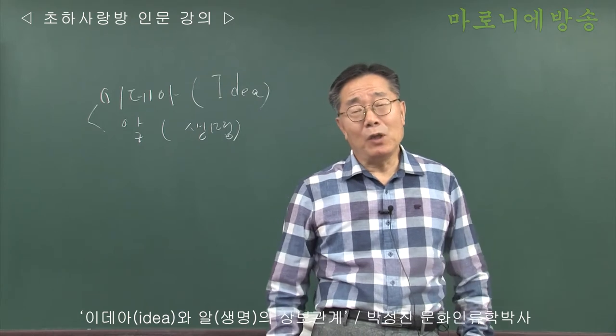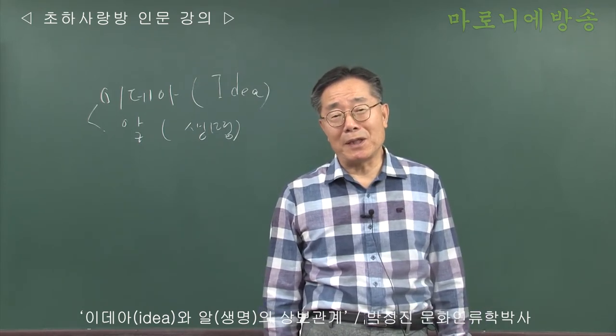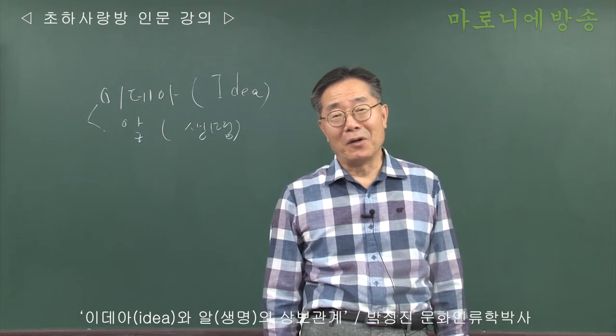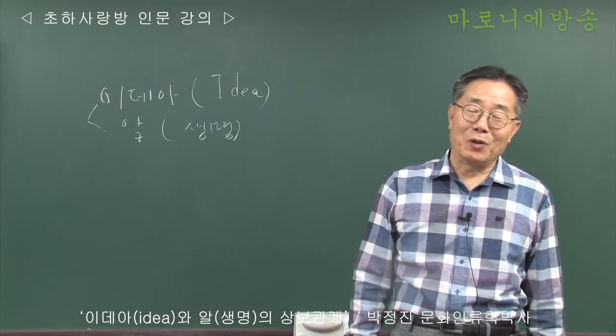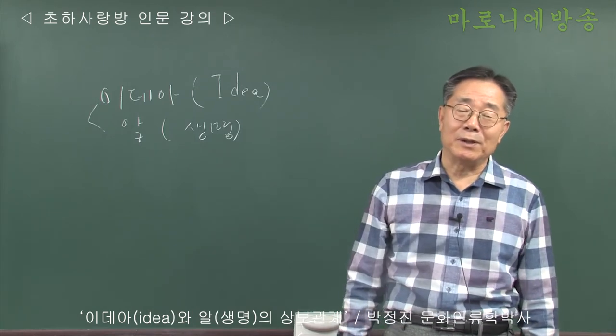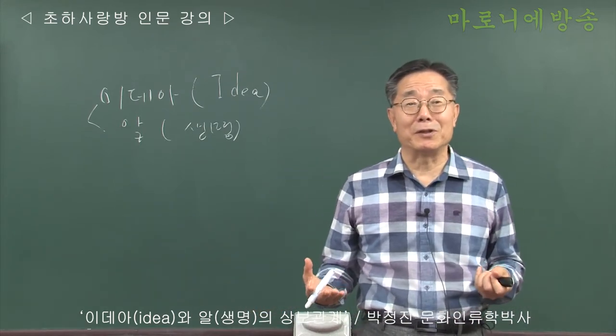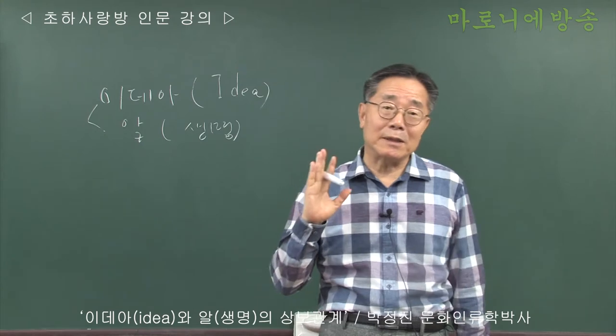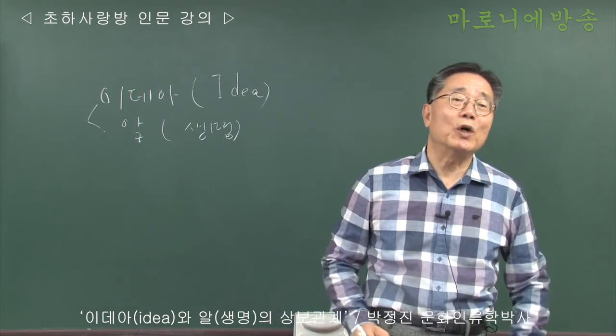여러분 인류의 4대 종교든 5대 종교든 어디서 발생하는지를 다 알고 계시죠? 종교는 다 동양에서 발생한 겁니다. 물론 유대라는 게 서양에 가까이 있기 때문에 기독교가 흔히 우리가 또 발달한 곳이 서양이니까 서양에서 발생한 것처럼 착각하기 쉬운데 사실은 다 동양에서 발생했습니다.